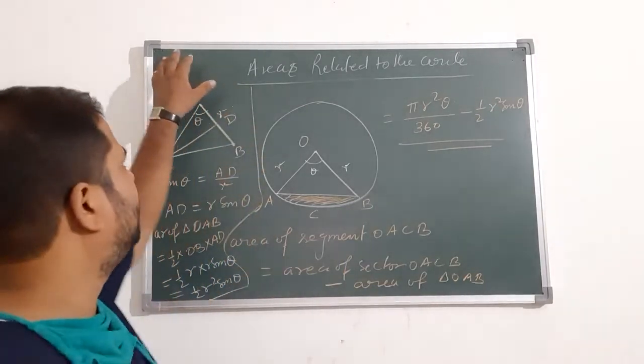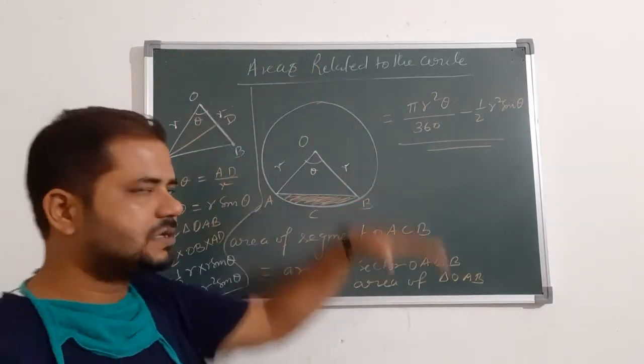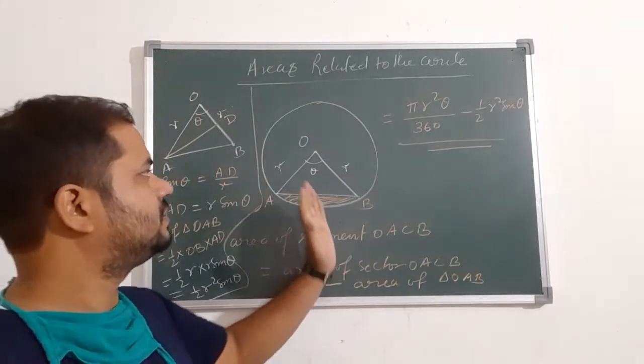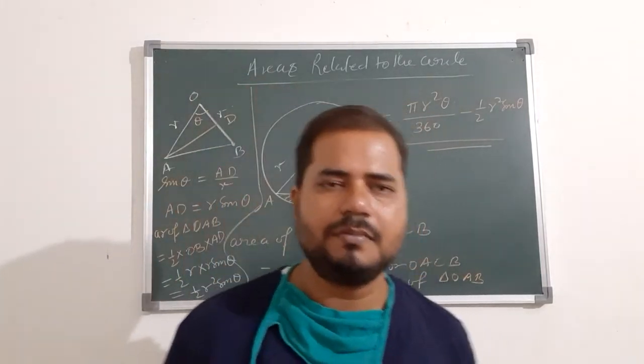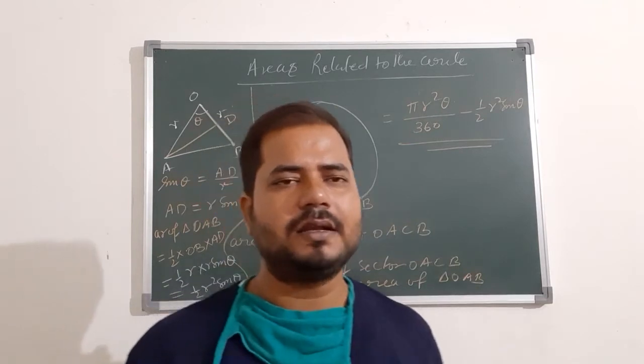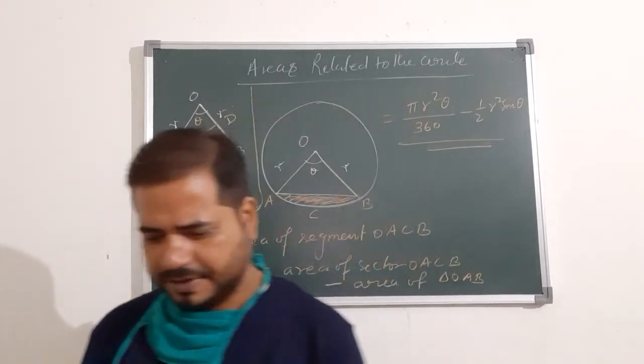And if you want to find the area of major segment, then we subtract this area from πR², that means from the whole circle. You will get the area of major segment.